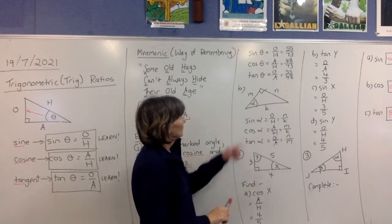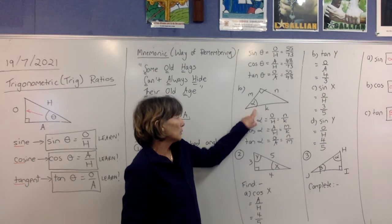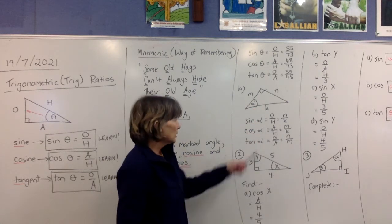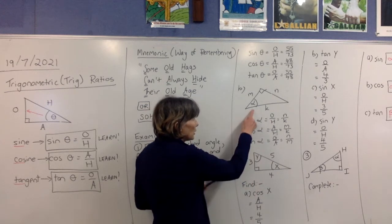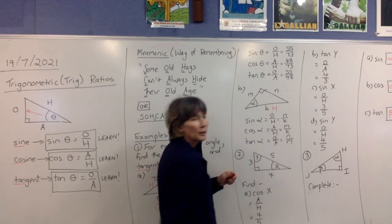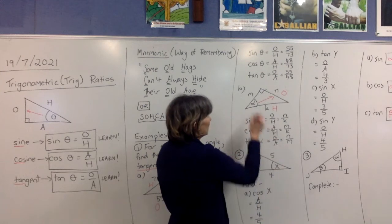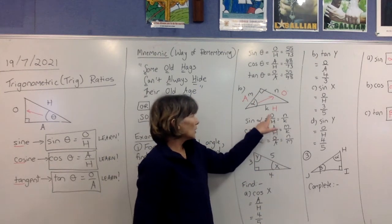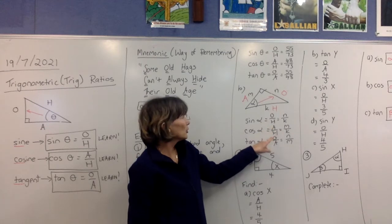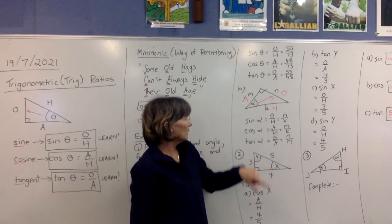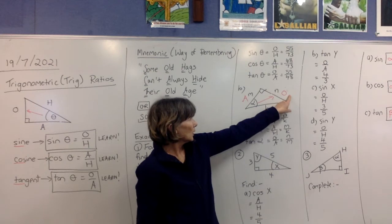Looking at the next triangle, we're finding sine alpha, cos alpha, and tan alpha for the marked angle. The hypotenuse is opposite the right angle — that's H. From your marked angle, go opposite — that's O — and the one remaining is A. So sine alpha is O over H, which is N over K. Cos alpha is A over H, M over K. And tan alpha is opposite over adjacent, N over M.